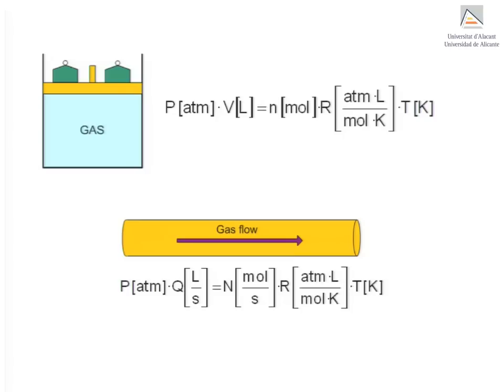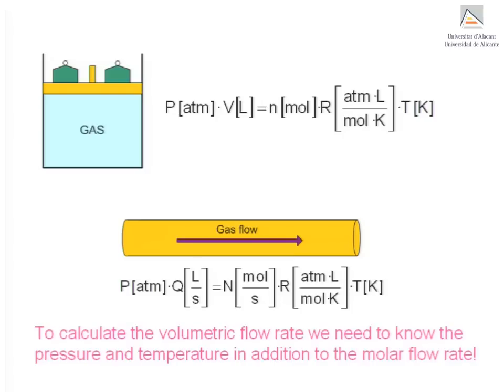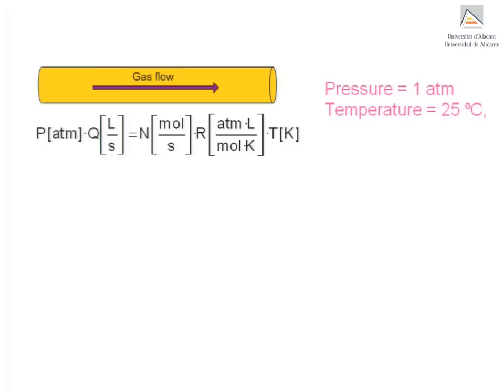Now, when we try to apply this equation to our situation, we realize that we also first need to know values for the pressure and temperature before we can calculate the volumetric flow rate. In this case, we should go back and carefully read the problem statement again. Let's imagine the problem statement tells us that the fluid pressure is 1 atmosphere and the fluid temperature is 25 degrees Celsius.